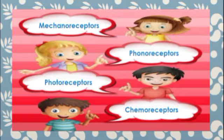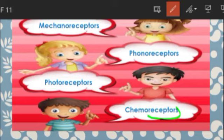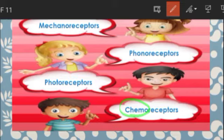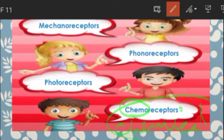What are chemoreceptors? As I told you, they are stimulus-receiving organs. 'Chemo' stands for chemical. So these are the type of receptors which identify certain types of chemicals. They receive the stimulus in the form of some type of chemicals.